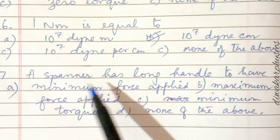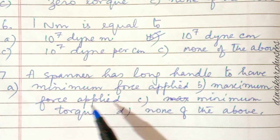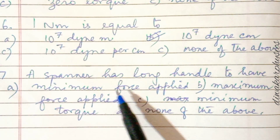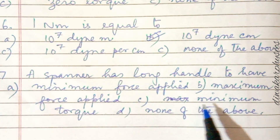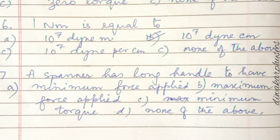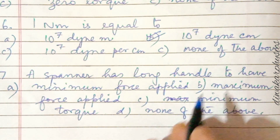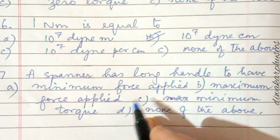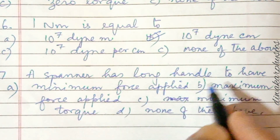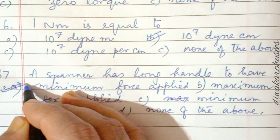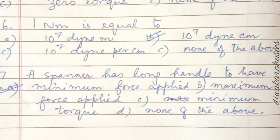Question seven: a spanner has a long handle to have — minimum force applied, maximum force applied, minimum torque, or none of the above? We use a long handle so that we can apply minimum force. When the perpendicular distance is more, the least force can be applied for the given torque. Answer is option A: minimum force applied.